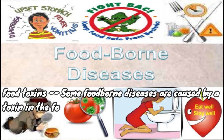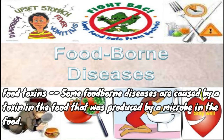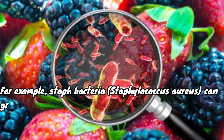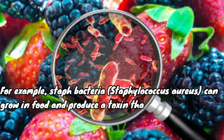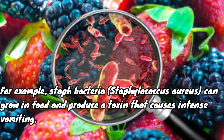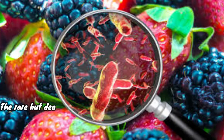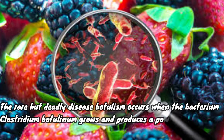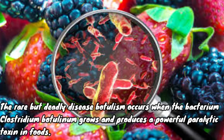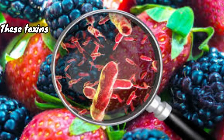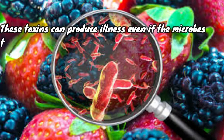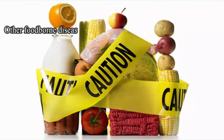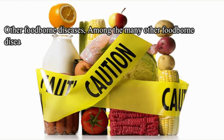Some foodborne diseases are caused by a toxin in the food produced by a microbe. For example, Staphylococcus aureus can grow in food and produce a toxin that causes intense vomiting. The rare but deadly disease botulism occurs when the bacterium Clostridium botulinum grows and produces a powerful paralytic toxin in foods. These toxins can produce illness even if the microbes that produced them are no longer present.